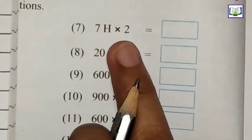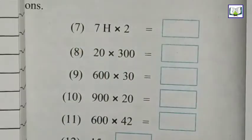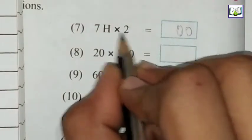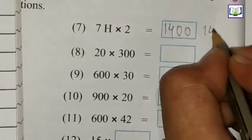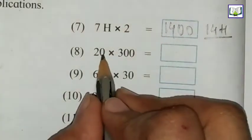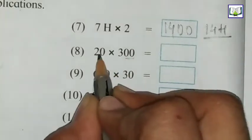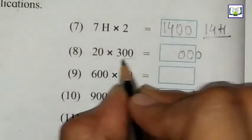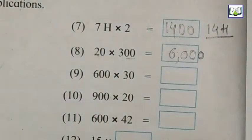Here is 700 plus 2. 100 means how many zeros? 2 zeros. 7 ones are 7, 7 twos are 14. We can also write this as 14H. Here is 20 multiply by 300. How many zeros? 2 zeros, 1 zero, so 3 zeros first: 1, 2, 3. 3 ones are 3, 3 twos are 6. So answer is 6000.